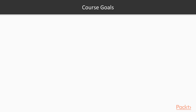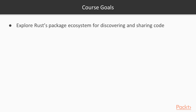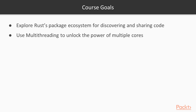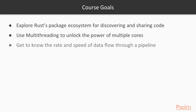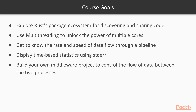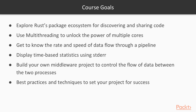There are several goals for this project. By the end of this course, you will be familiar with how to use Rust's package ecosystem to use others' code in your project. You will be able to launch threads and communicate between them with channels to take advantage of multiple CPU cores at once. You will learn how to measure data flowing through a pipeline and output those measurements to standard error or other places. You will be able to adapt the knowledge from this project to an arbitrary middleware project of your own if you wish. You will be aware of best practices and techniques to set your project on the path for success, and you will know how to publish that project to crates.io for others to use.